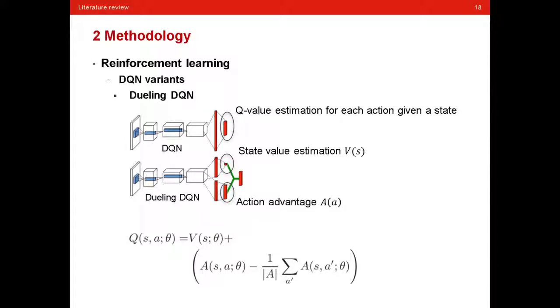While in DQN, the Q-value is produced directly, in Dueling DQN, it splits this process into two parts, and it estimates state value and action advantage separately.